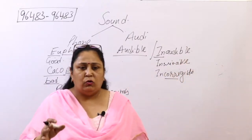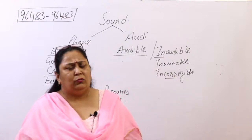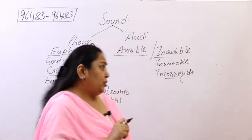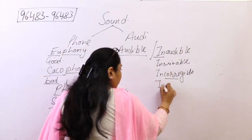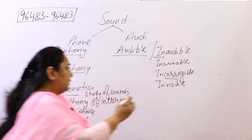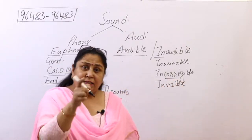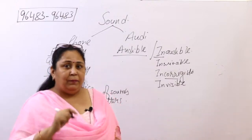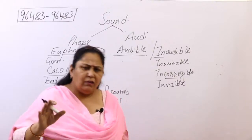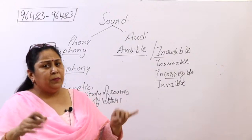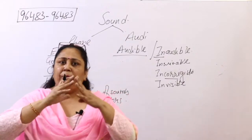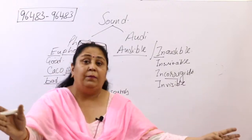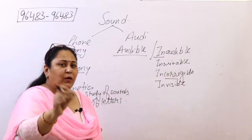From audi we get auditorium: audio means sound and -torium refers to a place, so auditorium is a place where sound can be heard. Similarly, aquarium comes from aqua (water) and -arium (place) — a place where aquatic animals are kept. Planetarium is a place where we observe planets and celestial bodies. Crematorium is another example of the -rium suffix. Etymology is such a vast branch that one word leads to many others.